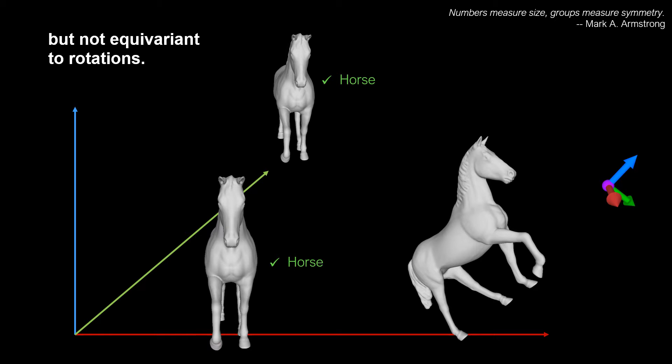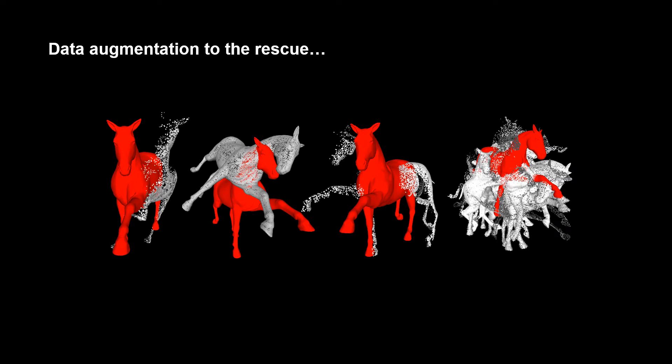While invariance is a requirement for successful classification, it is additionally desirable to identify these transformations. Therefore, we are interested in equivariant representations. While training with data augmentation can circumvent the problem to a certain extent, the burden of augmentation efforts grows exponentially with the dimension of the transformation space. Moreover, augmentation is not principled as full equivariance cannot be guaranteed.